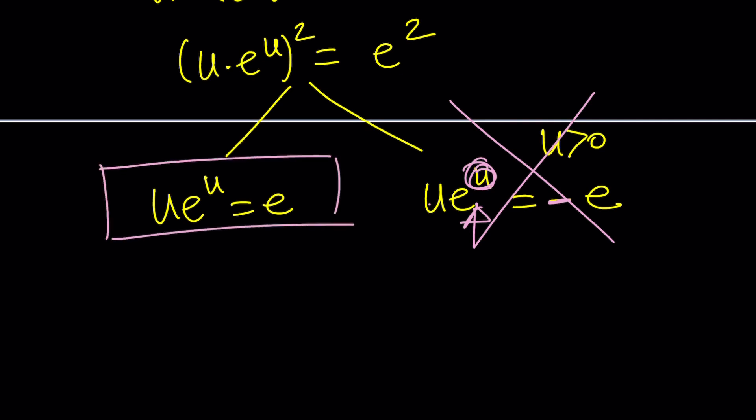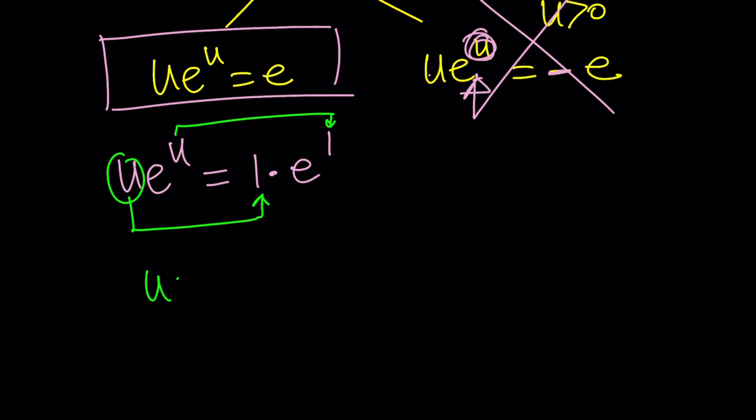Again you can use Lambert's W but let's follow a different path and write this as one times e to the power of one by one to one correspondence. Wouldn't it be nice if u was equal to one? And yes that's the case. u equals one which means square root of x is one which means x is equal to one.